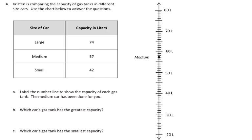So A says, label the number line to show the capacity of each gas tank. The medium car has been done for you. So now we're going to go ahead and plot the large and the small. There's the large, it's 74, and the small is at 42.